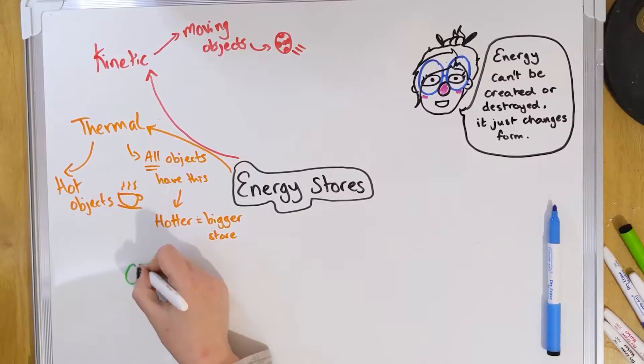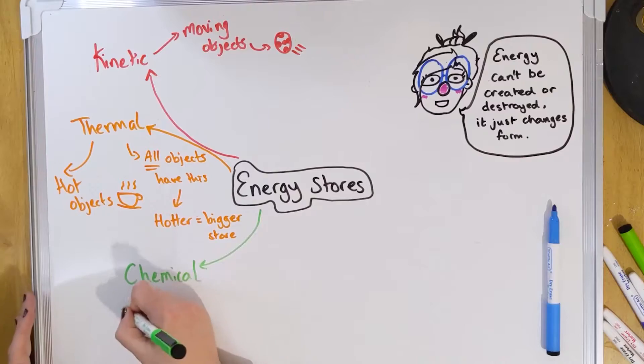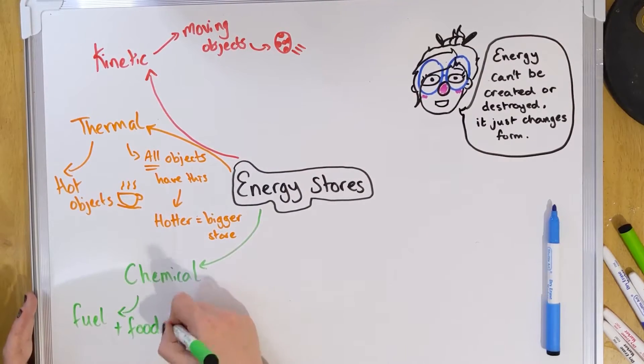Our next store is chemical energy. Chemical energy is energy stored inside fuels and inside food that gets released during a chemical reaction. Think of something like broccoli — it's got chemical energy stored in it.